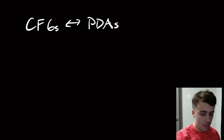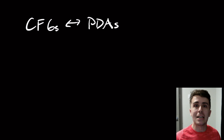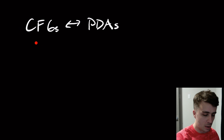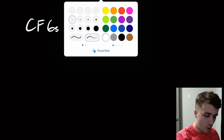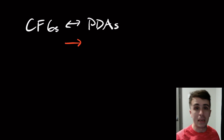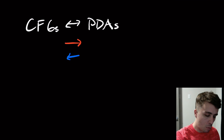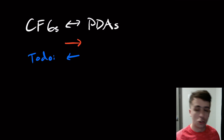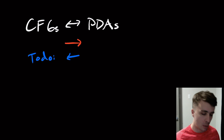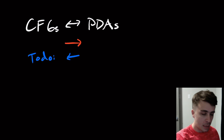On the channel we've already done the CFG-to-PDA process, and the whole reason for doing that is to show that context-free grammars are equivalent to PDAs. We want to show that PDAs really are the right model of computation for the context-free languages. What we've already done is the CFG-to-PDA direction, but to show full equivalence, we need to show that an arbitrary PDA can be converted into an equivalent context-free grammar.